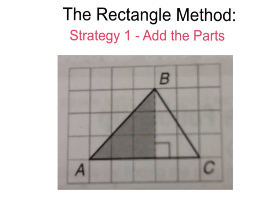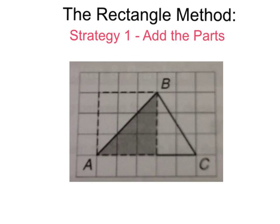First, I am going to draw a rectangle around the left part of the figure. Here you can see the rectangle that I have drawn. The area of this rectangle is nine square units. The shaded region is one-half of the rectangular region, so its area is 4.5 square units. If you count the boxes inside the rectangle, you will come up with nine. Nine divided by two is 4.5.